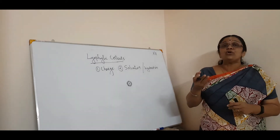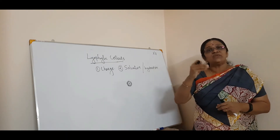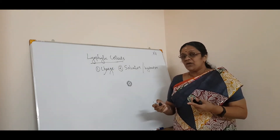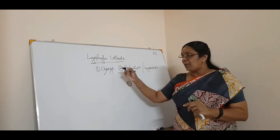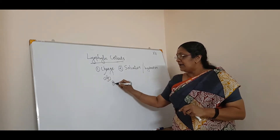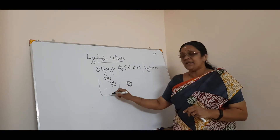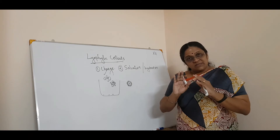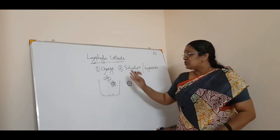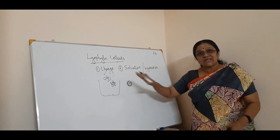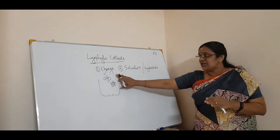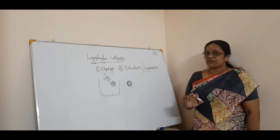To precipitate lyophilic colloids, just remove the charge. By adding a small amount of electrolyte, the charge is neutralized, and the sol forms an aggregate and precipitates at the bottom. So by adding a small amount of electrolyte, you can get coagulation of lyophilic colloids due to their charge-based stability.